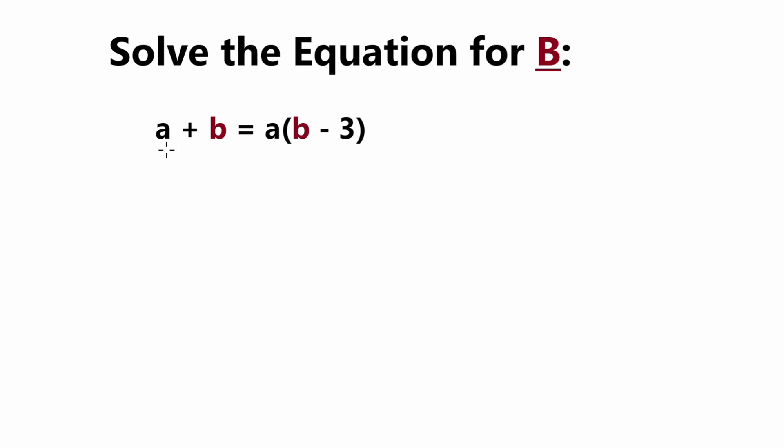We have this equation here, a plus b equals a times b minus 3 in parentheses, and we want to solve the equation for b, which means we want to rewrite this equation to get b by itself on one side.